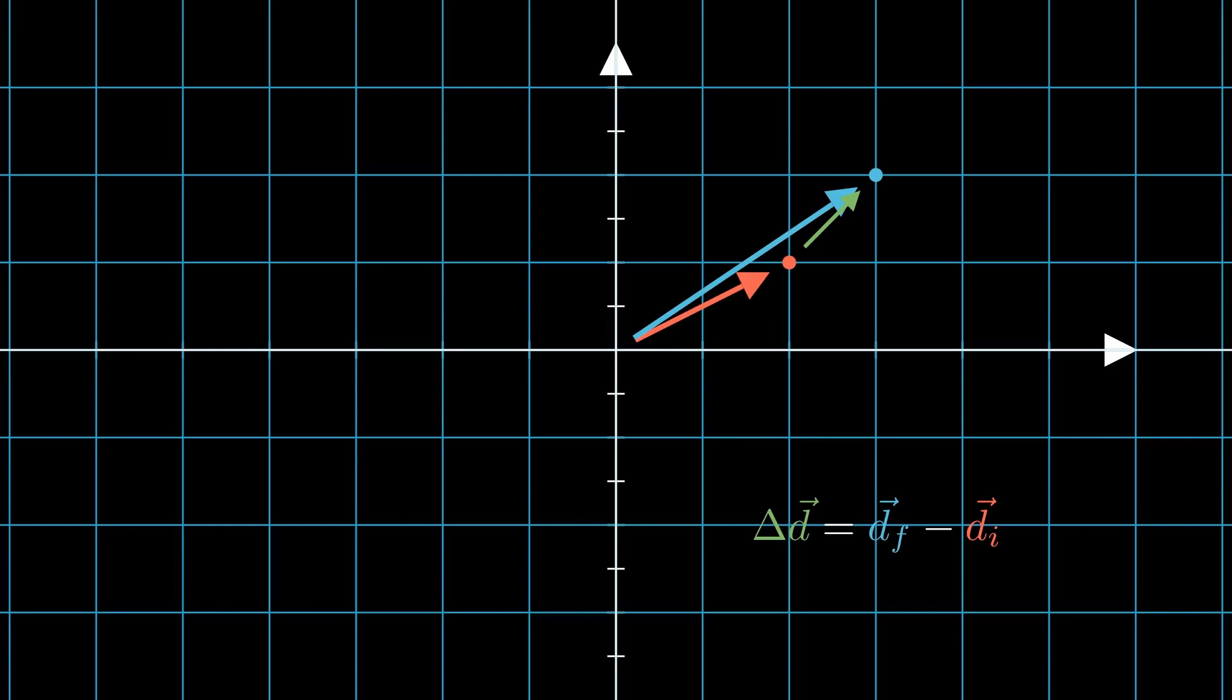Now, this doesn't exactly tell us the distance traveled. However, since we have the displacement vector, we can just take its magnitude to get the distance. Now, this is just one movement. What if our object continues to move afterwards?